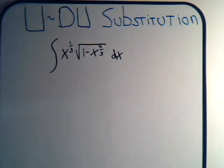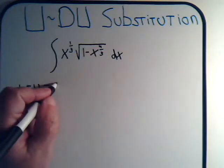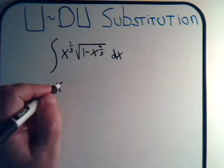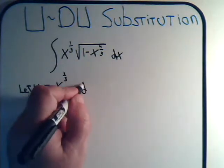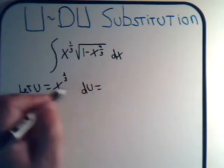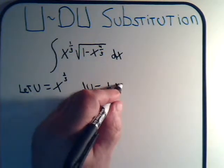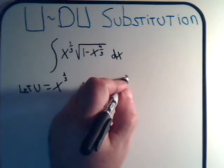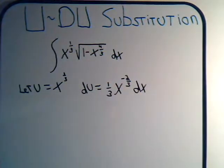For example, suppose we looked at this and said, well, let's try using, call that u. So we said, let u equal x to the 1/3, du would equal 1/3 times x to the minus 2/3 dx.